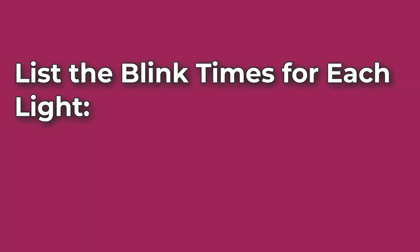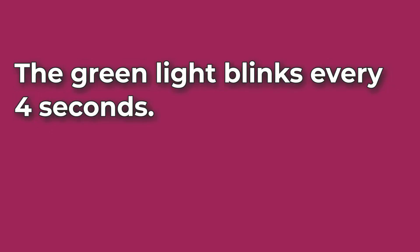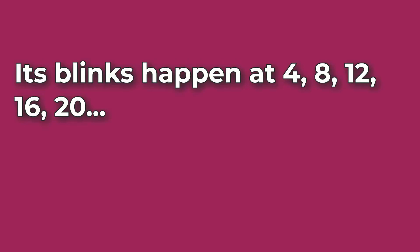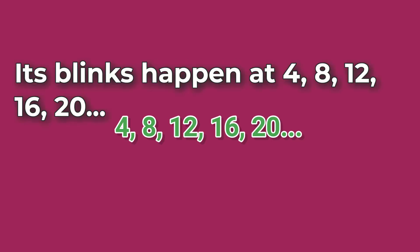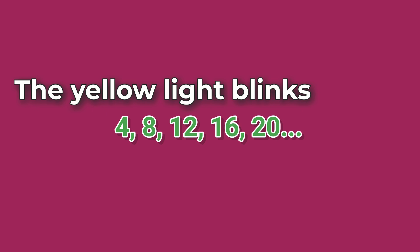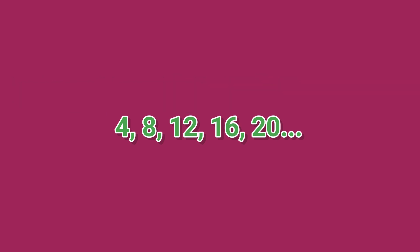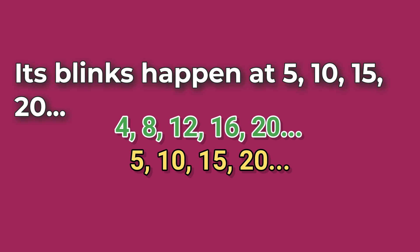List the blink times for each light. The green light blinks every 4 seconds — its blinks happen at 4, 8, 12, 16, 20, and so on. The yellow light blinks every 5 seconds — its blinks happen at 5, 10, 15, 20, and so on.